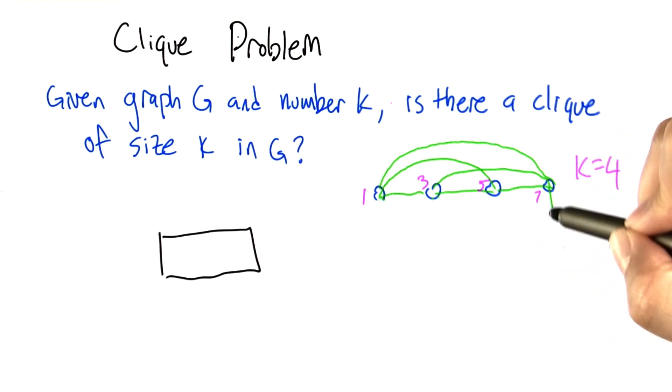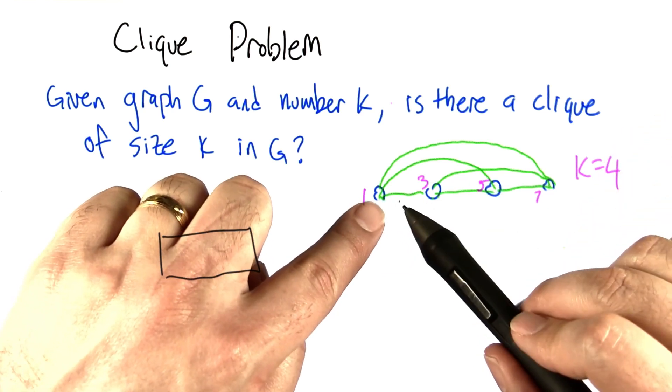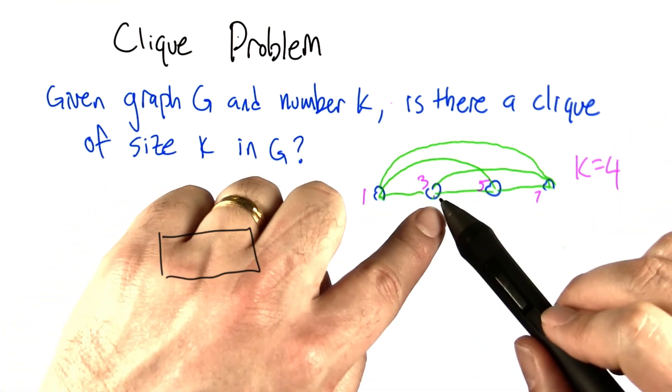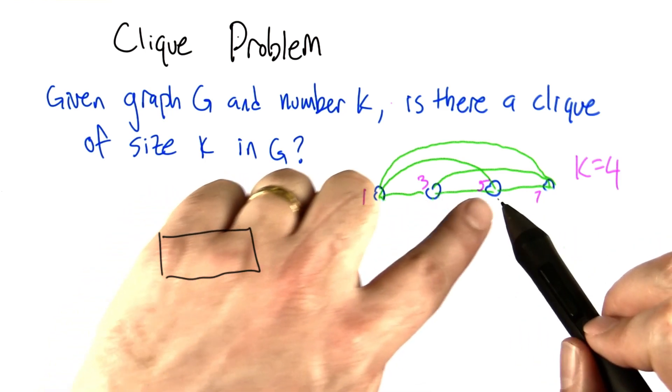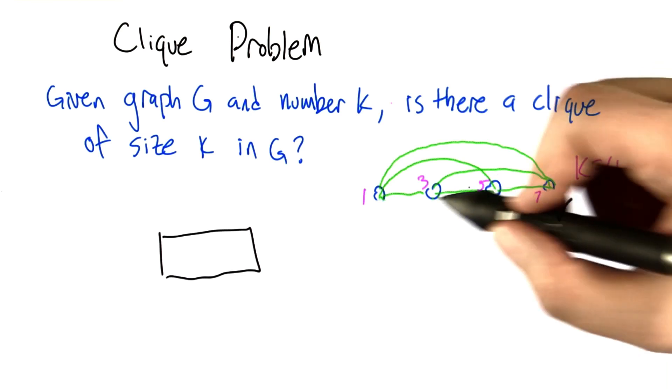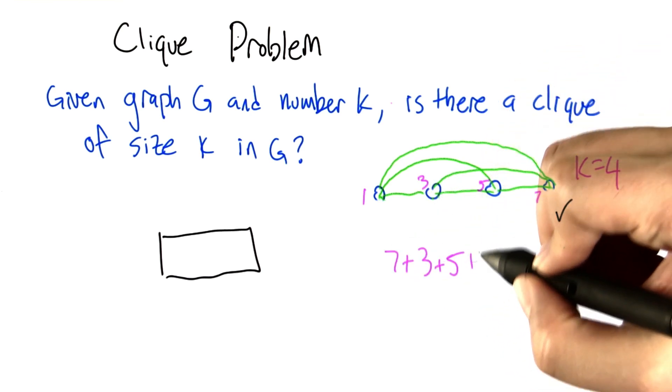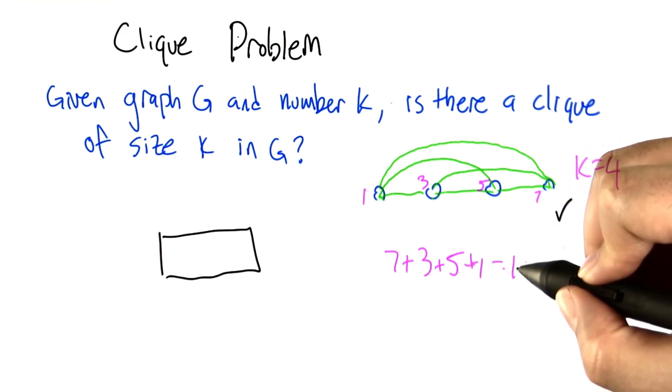So the only possibility left is that these 4 nodes make up a 4 clique. And that would mean 1 needs to be connected to 3, 5, and 7. 3 needs to be connected to 5 and 7. And 5 needs to be connected to 7, which it is. So if we add up these node numbers together, 7 plus 3 plus 5 plus 1 is 16.